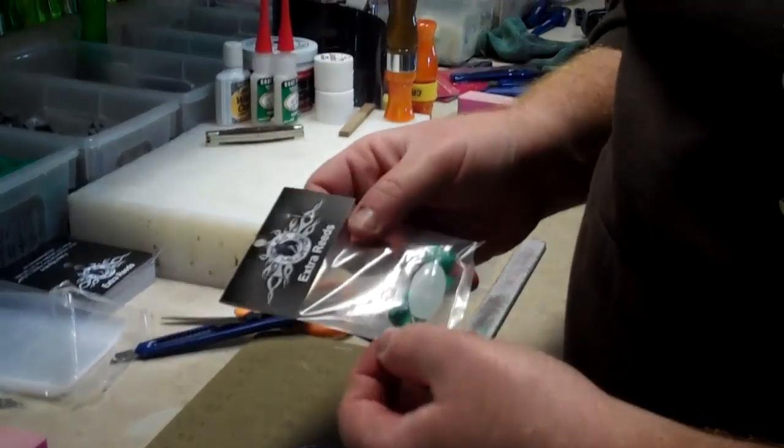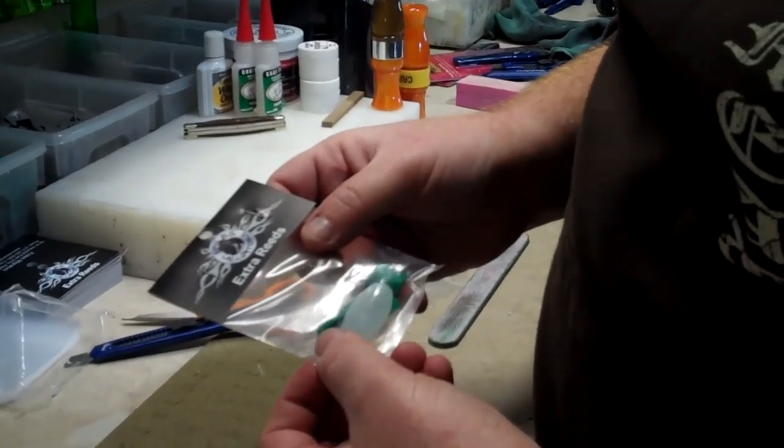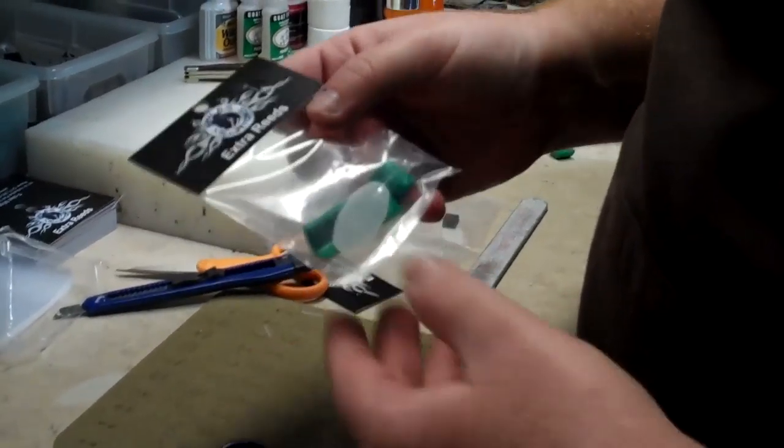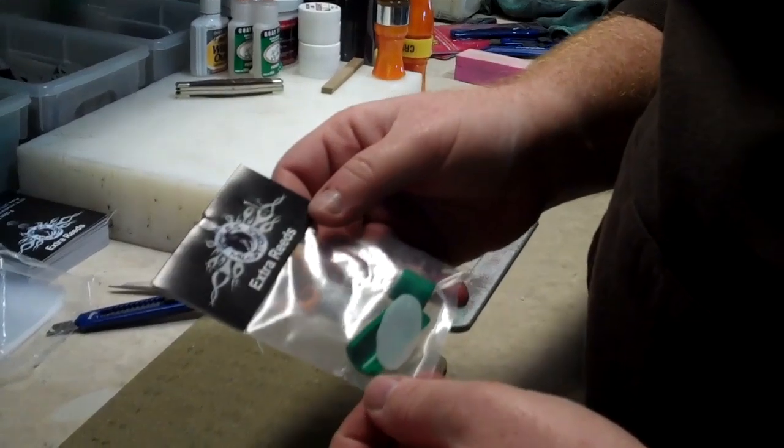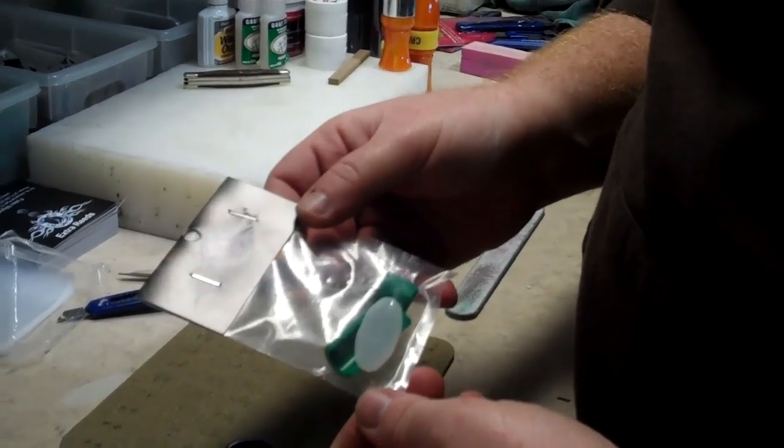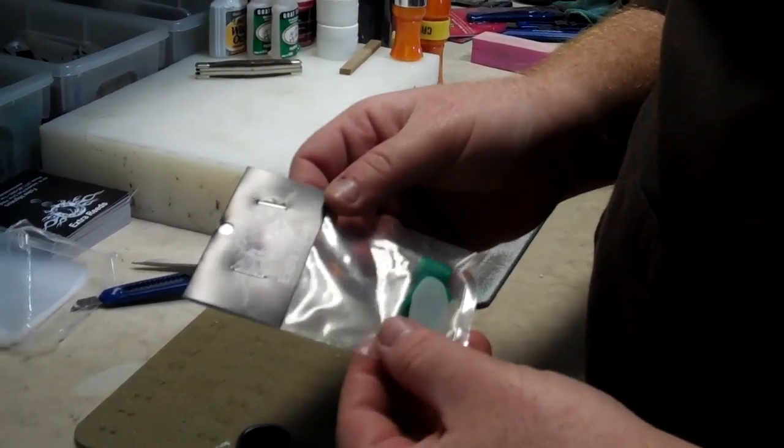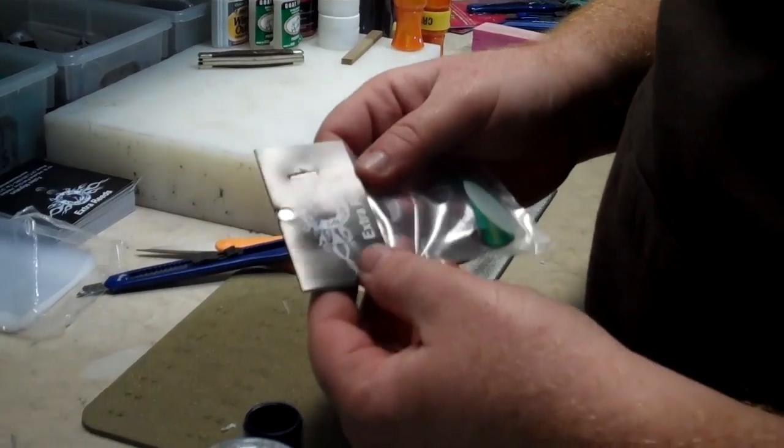Basically, you have three pieces to a gut system of a short reed. You have the tone board, the read, and the wedge. If you order a gut set from us, it comes in a package just like this. You'll get this exact same thing in the mail, so I'm going to show you how to tune this call with a gut set just like you'd get.